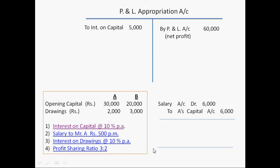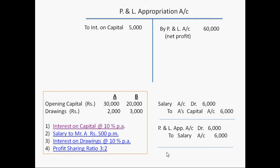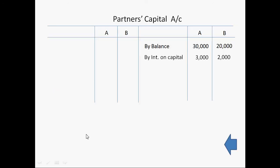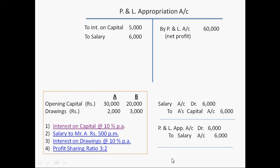After this entry, one more entry firm will pass just to close the salary account. The entry is: P&L appropriation account debit, to salary account. Salary account was debited, so in the next entry it will be credited just to close this account, and P&L appropriation account debited. The second entry will be posted on the debit side of P&L appropriation account: to salary 6,000. The first entry will be posted on the credit side of A's capital account: by salary 6,000. So again balance of A's capital account increased — now the balance of A's capital account is 39,000.